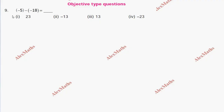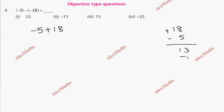Objective type questions. Question number 9: minus 5 minus of minus 18. So minus 5 plus 18. Two may opposite sign, peri number of sign. Peri number of sign is 3. Peri number of sign is plus, so we have to add plus. Value is plus 13. The regular option is 3.